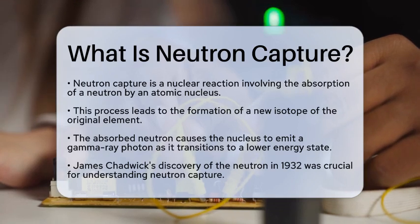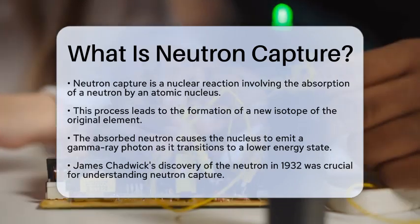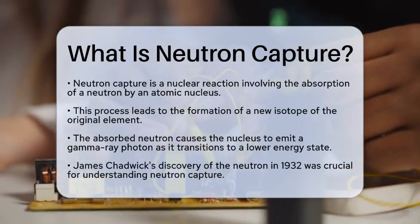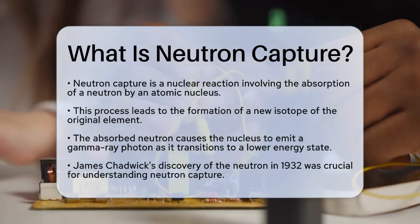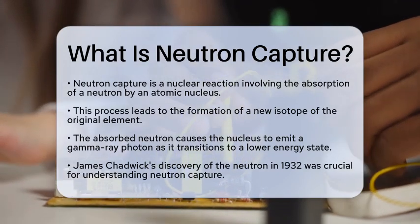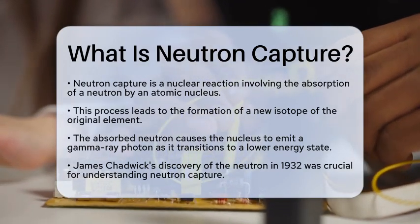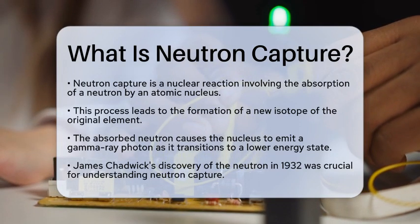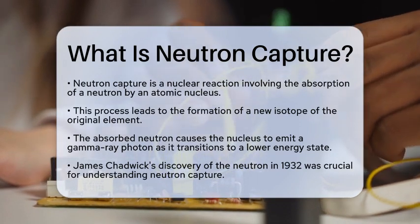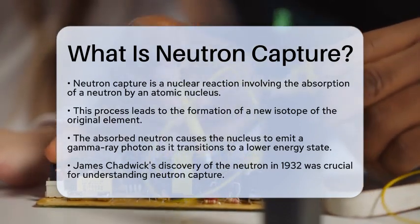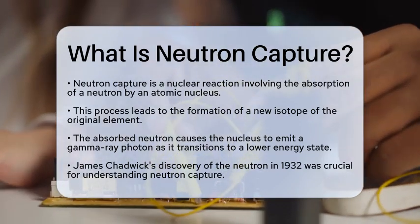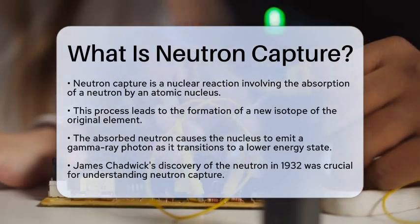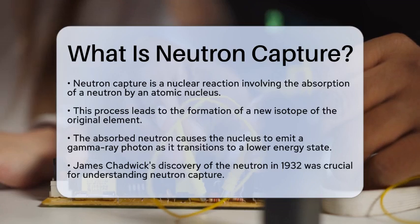After the neutron is absorbed, the nucleus often emits a gamma ray photon. This photon is a discrete packet of electromagnetic energy. This emission occurs as the newly formed compound nucleus transitions to a lower energy state.